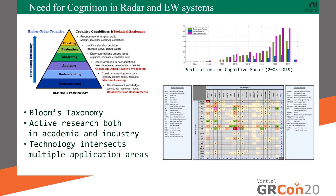Over time that moved into the area of what research calls knowledge-aided adaptive processing, where information is used to draw connections across multiple objects. And today there is a lot of emphasis on evaluating and creating new experiences, which is where higher-level cognitive principles of intelligence, language, attention, perception, and memory are coming into play. Active research in all these areas is reflected in the increasing number of publications shown on Google Scholar over the last decade.